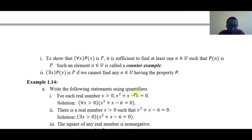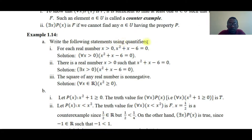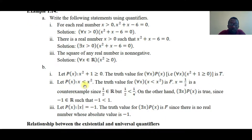Write the following statements using quantifiers. First: 'For each real number x greater than zero, x squared...' — this uses a universal quantifier: for all x greater than zero. Second: 'There is a real number' — this uses an existential quantifier. Third: 'The square of any real number is non-negative.' Let p(x) equal x squared plus one greater than or equal to zero. The truth value of 'for all x, p(x)' — since p(x) is true for all x — is true.